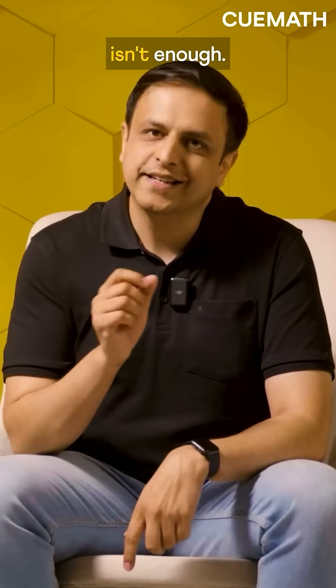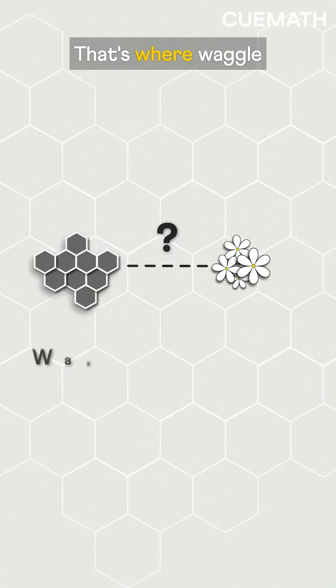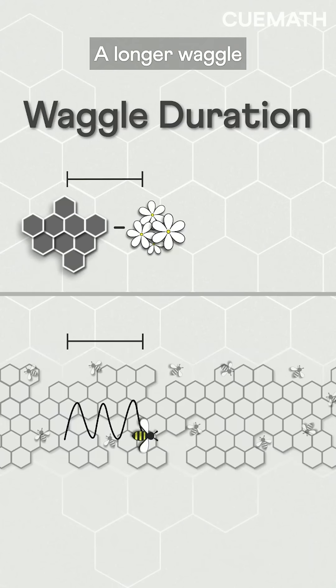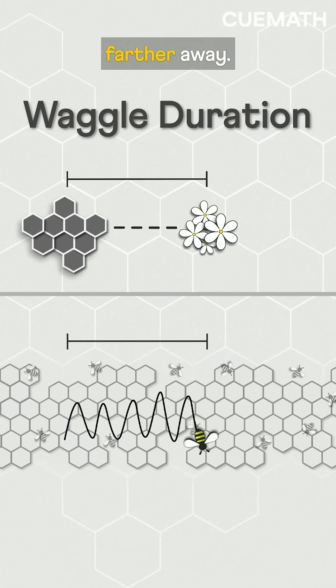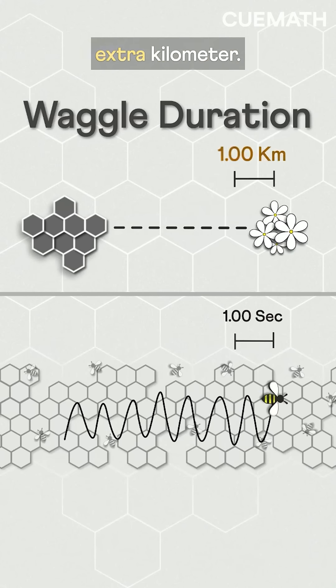But wait, direction isn't enough. They must also tell how far the food is. That's where waggle duration comes in. A longer waggle means the food is farther away. In general, bees add about a second per extra kilometer.